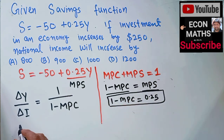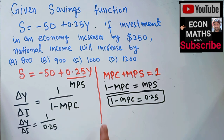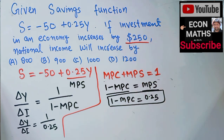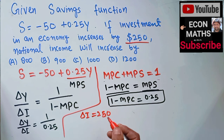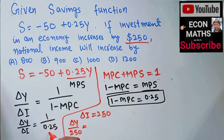Using this condition, the change in income divided by change in investment equals 1 divided by (1 minus MPC), which is 1 divided by 0.25. We are also told that investment increases by $250, so the change in investment equals $250. Substituting: change in income divided by 250 equals 1 over 0.25.